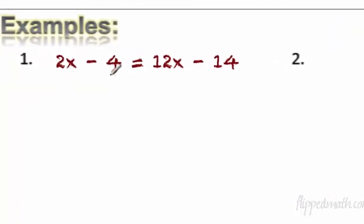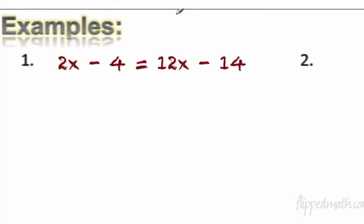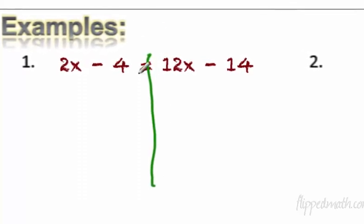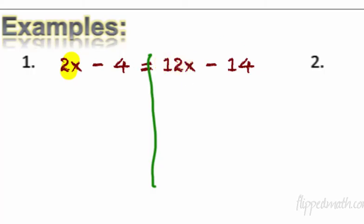All right, we have 2x minus 4 equals 12x minus 14. We draw the line down the middle — these are the two sides of our equation. I find the variable terms: here's a variable term, here's a variable term. Both have x's. The smallest variable term is 2x, a positive 2x, so I'm going to subtract 2x from each side of the equation first.